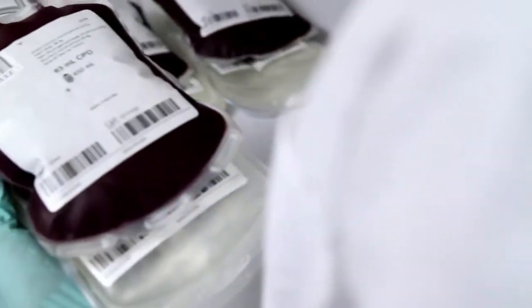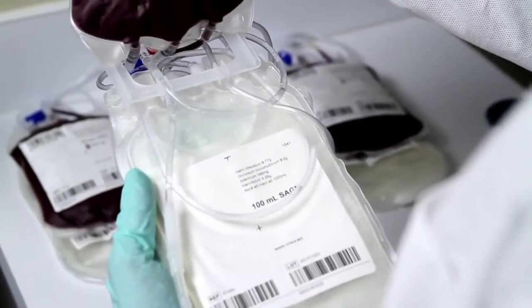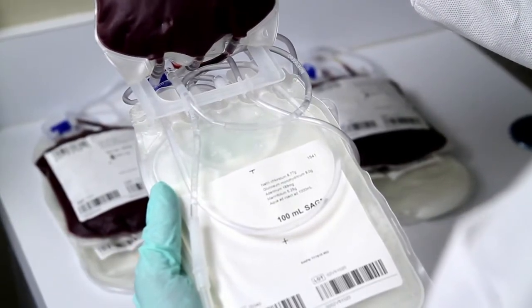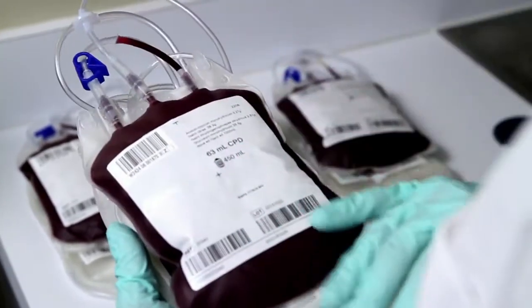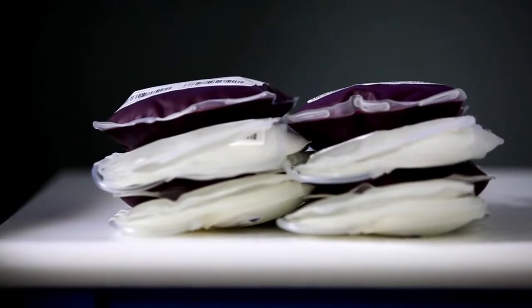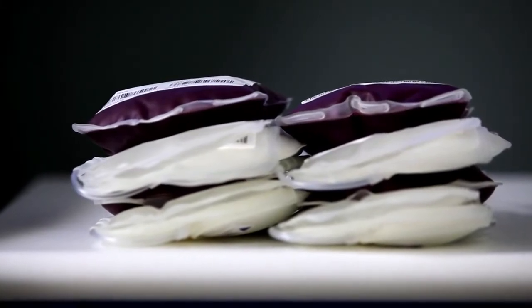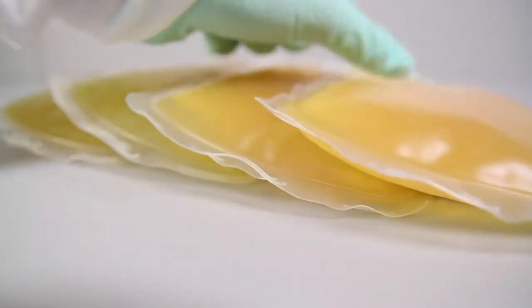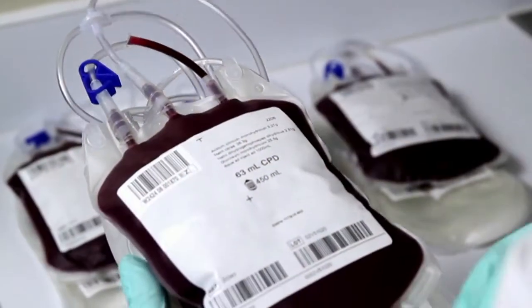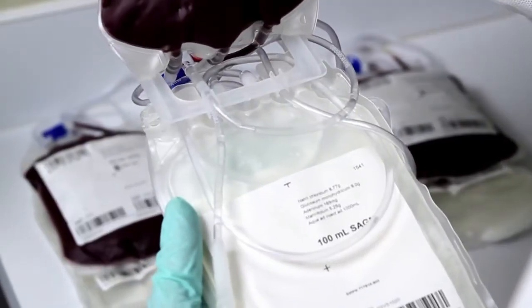To simplify inventory and stocking, a single bag set accommodates all Revios system procedures. The bag set is composed of a collection bag and component bags. Plasma is collected in the plasma bag. This is the whole blood collection bag. The red blood cells remain in the collection bag.